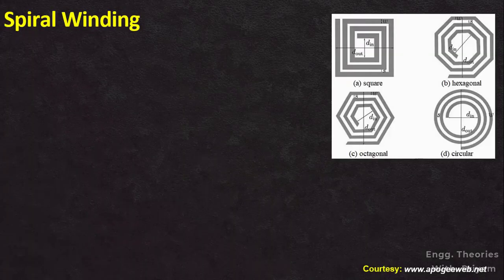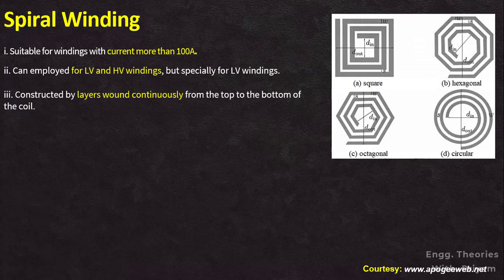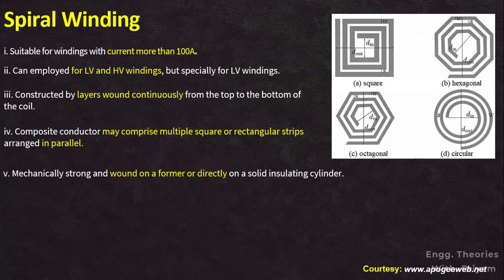The first type of winding used in transformers is spiral winding. It is only suitable for windings that carry currents more than 100 amperes. Typically it is employed for LV windings, but it can also serve for HV windings in cases where the winding needs to carry a current exceeding 100 amperes. The spiral coils are typically wound continuously from the top to the bottom of the coil, and the composite conductor may comprise multiple square or rectangular strips arranged in parallel.